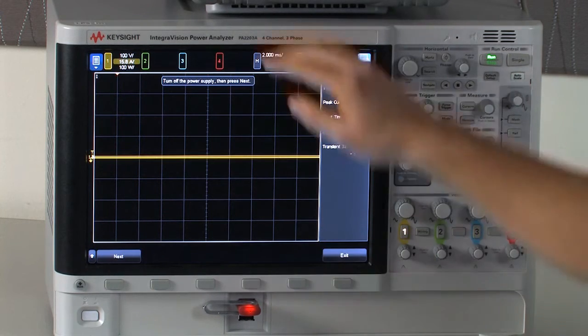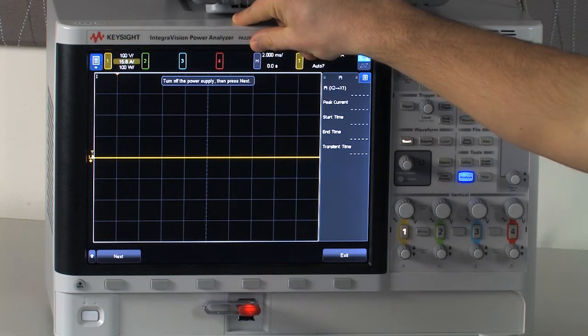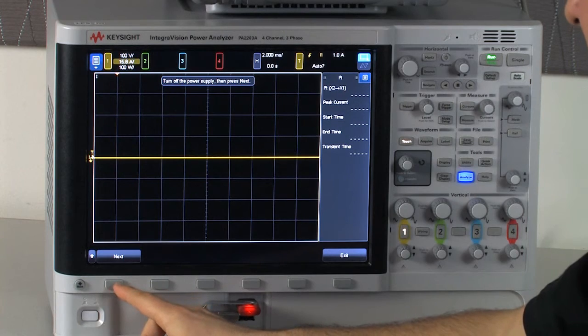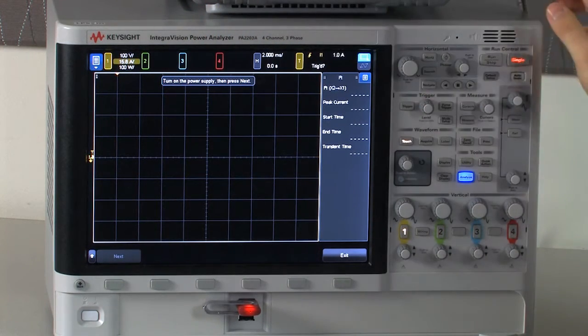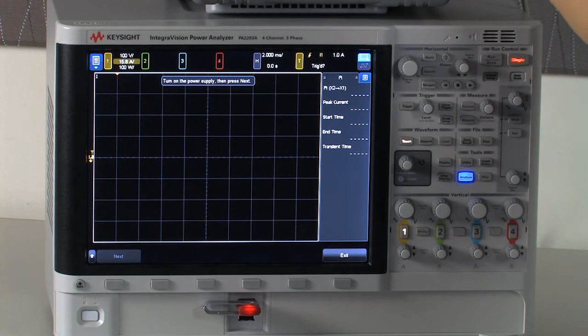Hitting start here, you'll be prompted a few things. It'll first tell you to turn off the power supply and click next. That's to make sure that the box is ready to capture your inrush. Clicking next, it'll tell you to turn on the power supply and notice that the box went into single mode. I'll go ahead and trigger my inrush now.